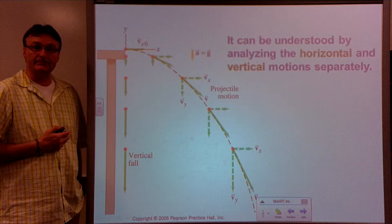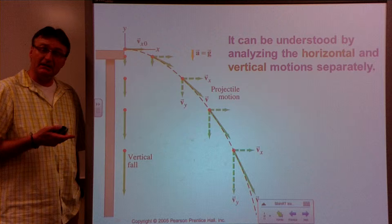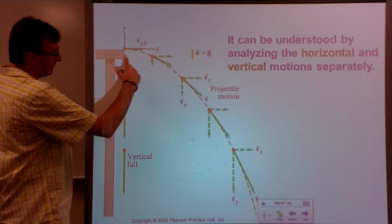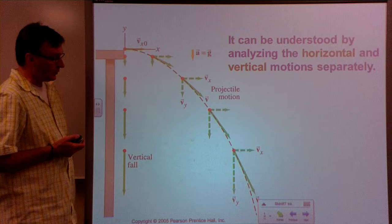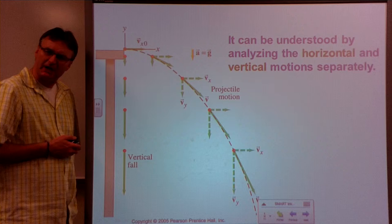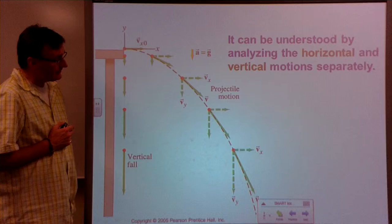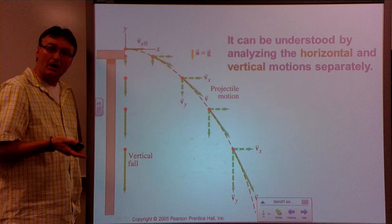Not so in the y direction, of course, because the object is being accelerated by gravity. You might look at the trajectory and incorrectly assume that the object is slowing down in the x direction — that as it goes further out, it seems to be slowing down in x — but really it's not.